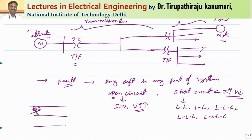These flashovers can happen because of switching transients or lightning strokes, during which voltages increase drastically. Similarly, some bird, animal, or object — for example, during wind or rainy season, a plant branch — may come and fall on the transmission line. The plant can fall between two conductors or may touch all three conductors, and accordingly it will be converted to the equivalent fault type.